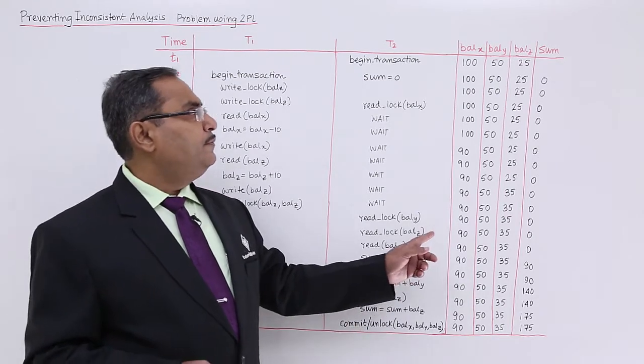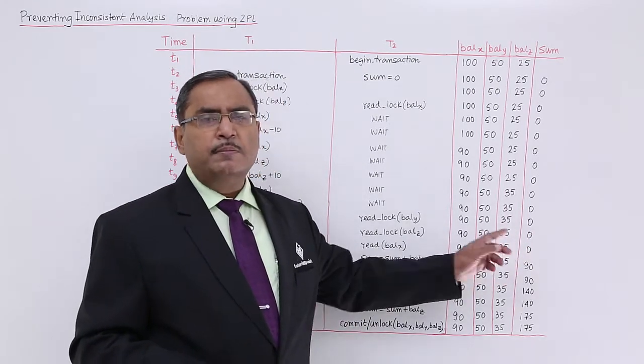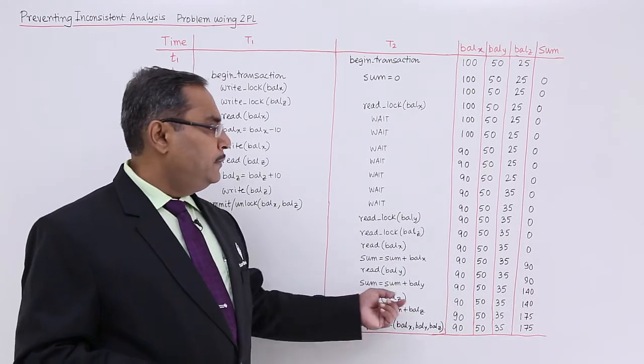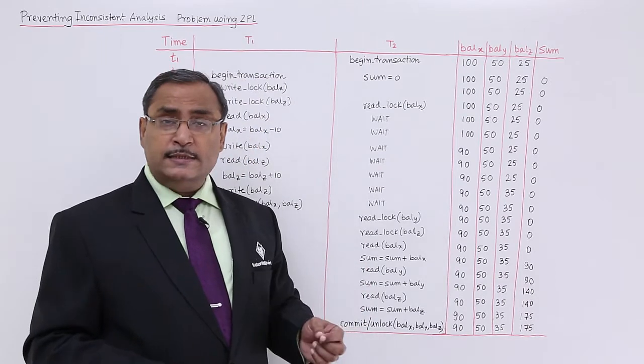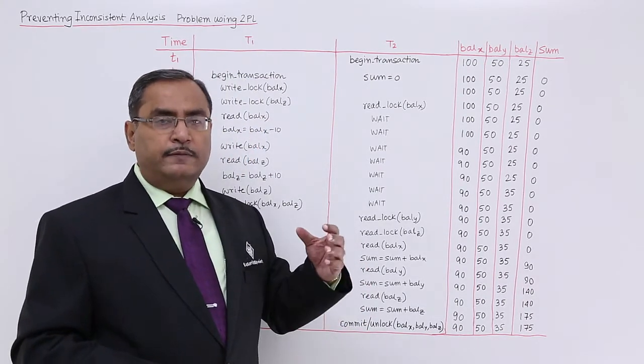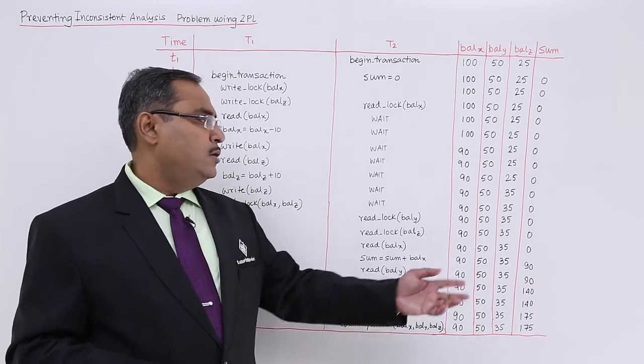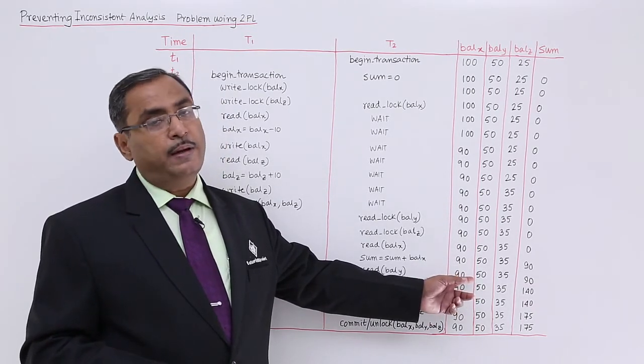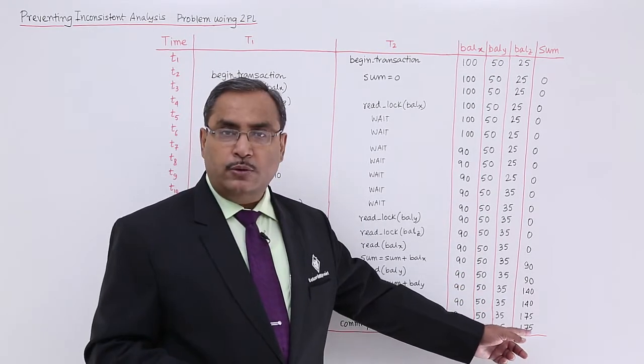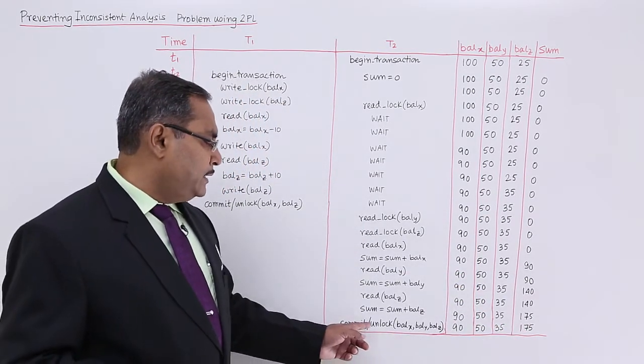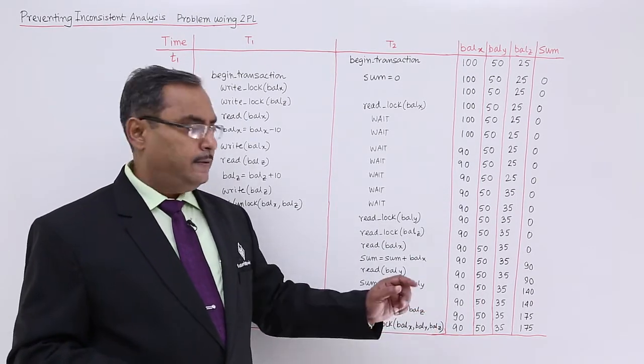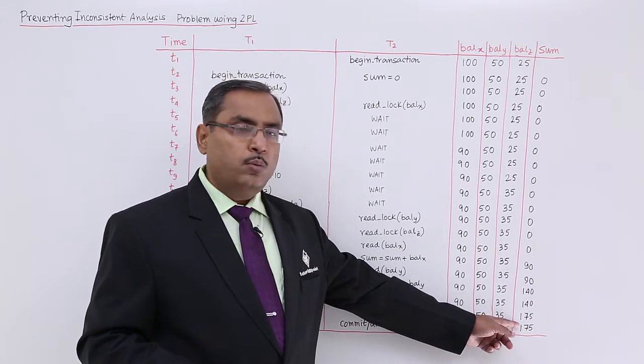The basic difference between this balance X and the sum is that sum is a memory variable. Whenever there is some update with the sum, we are reflecting it directly. But balance X is the data item from the database. Until it is getting written back onto the database, we are not updating the respective balance X, balance Y, and balance Z values. Now ultimately the sum is having this value 175, and commit and unlock is taking place on all three items: balance X to balance Z. So now this is my 175.